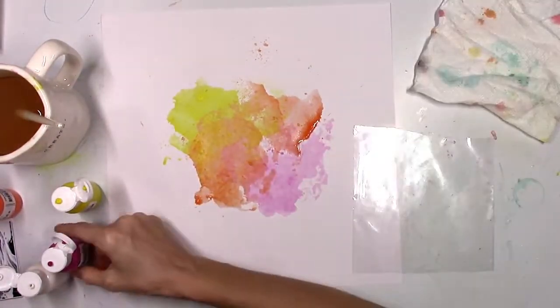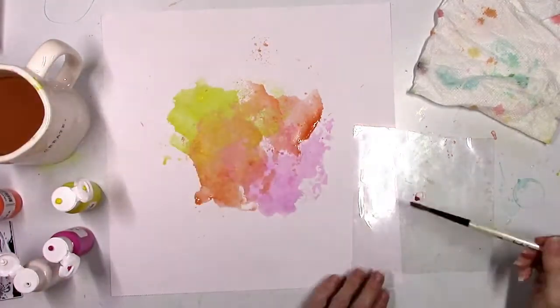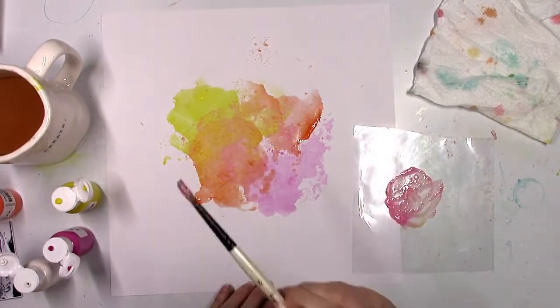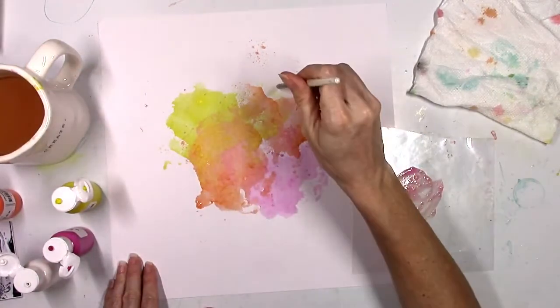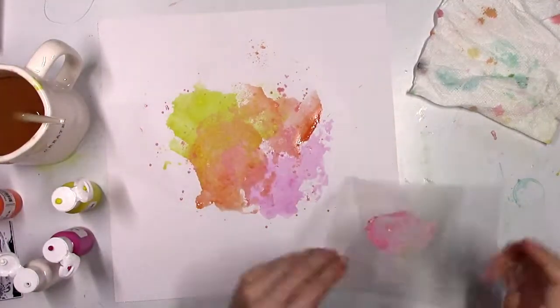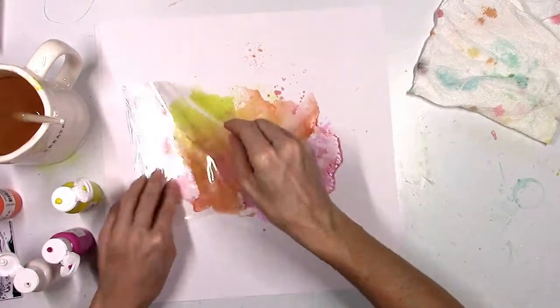And something that I did discover, since these are acrylic paints and they're pretty thick, when I added the water to them, the paint didn't all dissolve into the water. And so when I flipped the packaging over, some of the actual paint in its thick form kind of created these texture ridges.